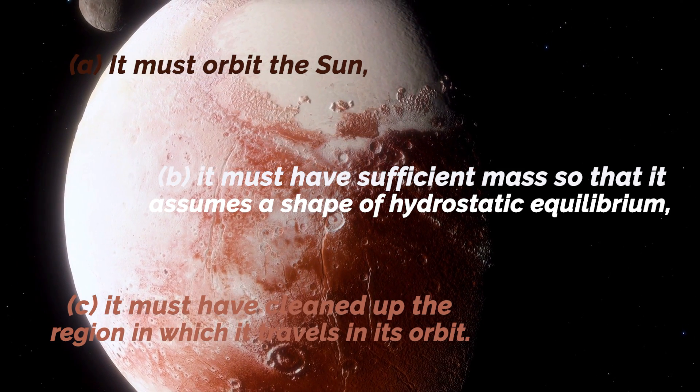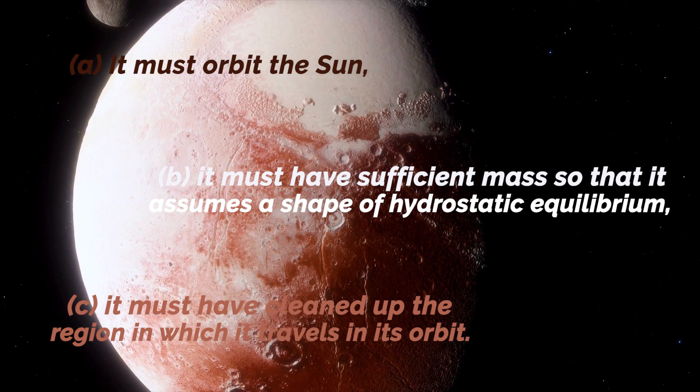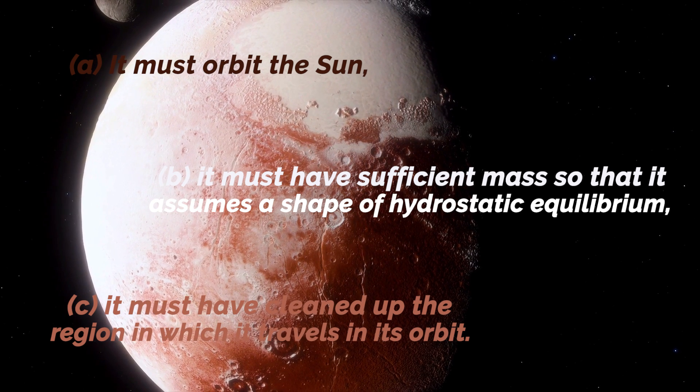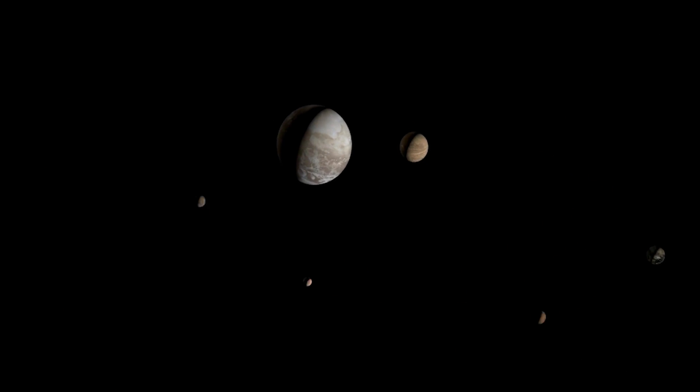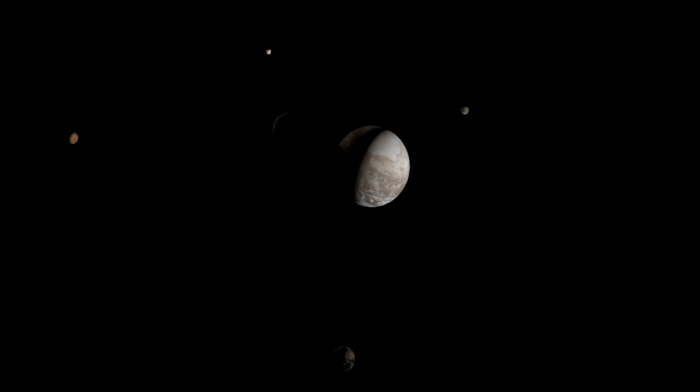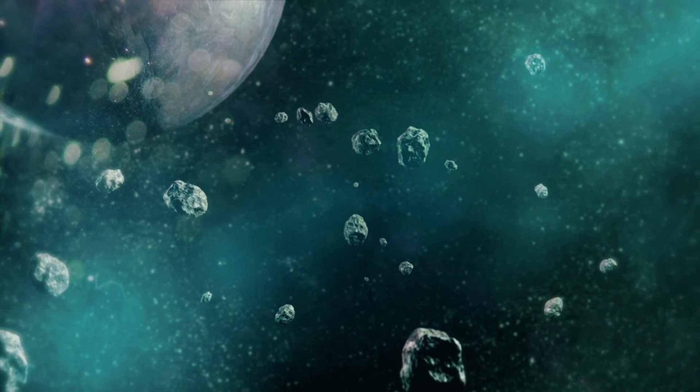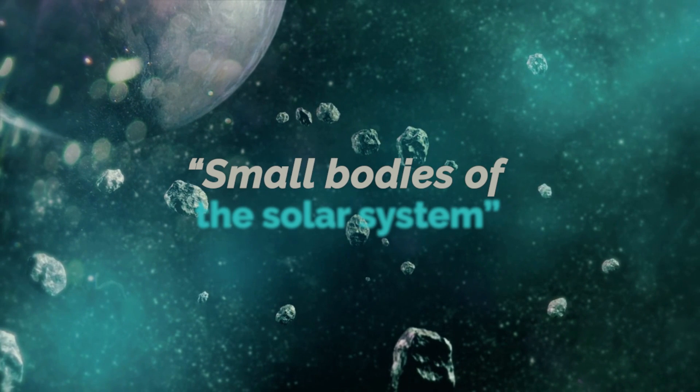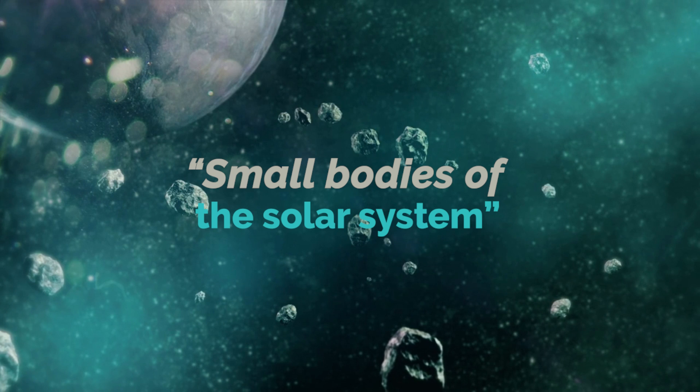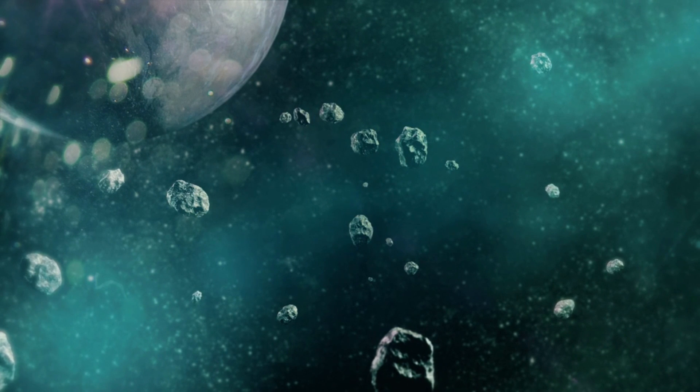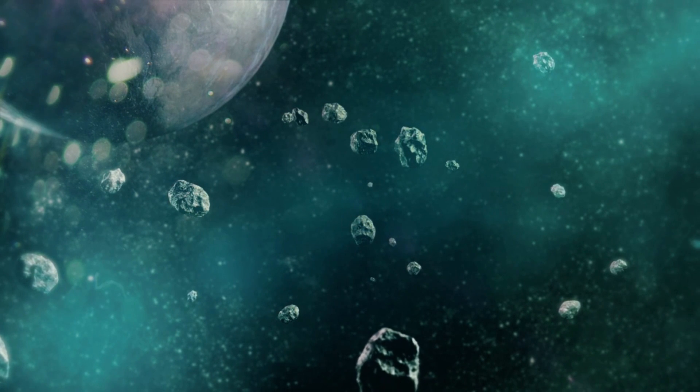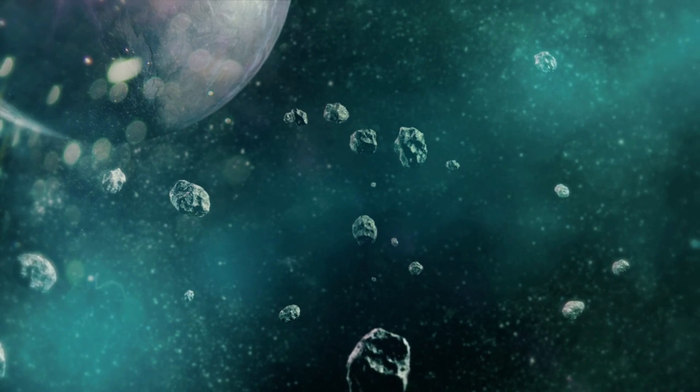Only if it possesses all three of these characteristics can an object deserve the title of planet, while if it lacks the third characteristic, it must be considered a dwarf planet. For all other cases, except satellites, we must speak of small bodies of the solar system. And of course, the large number of objects orbiting Pluto led to its rapid exclusion from the aristocratic club of planets.